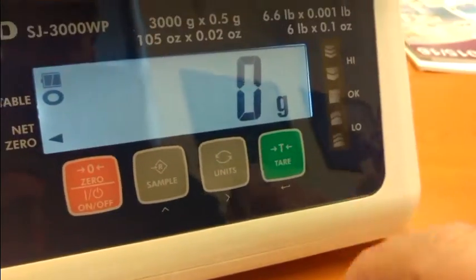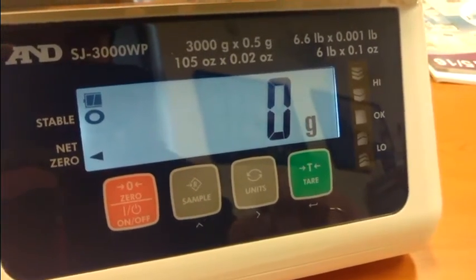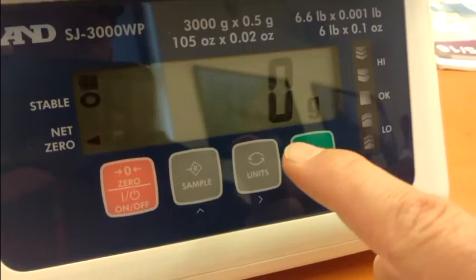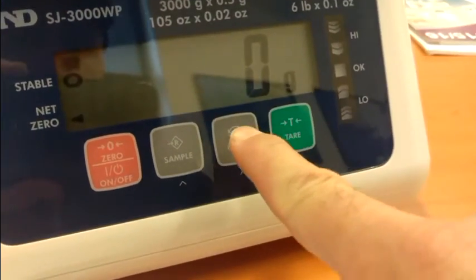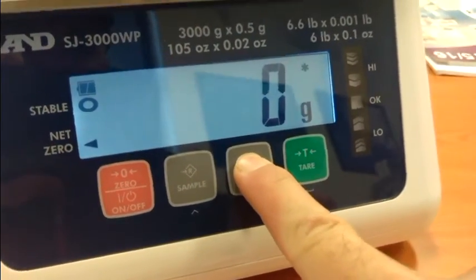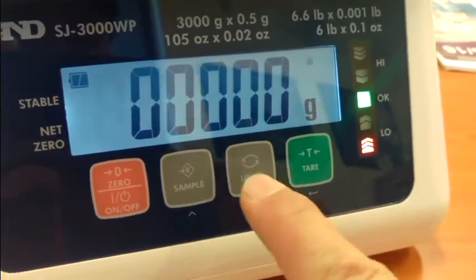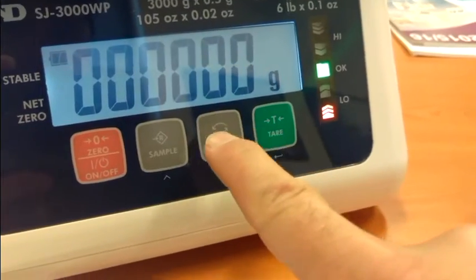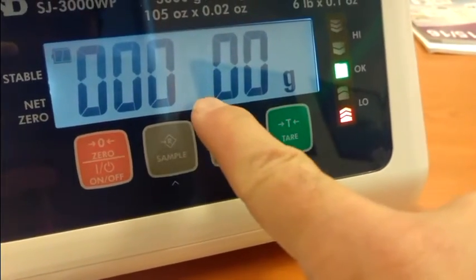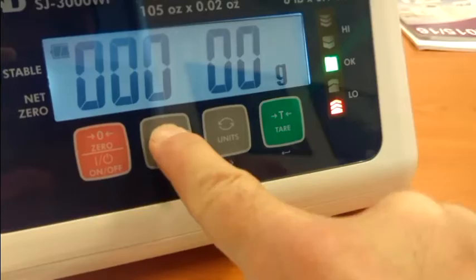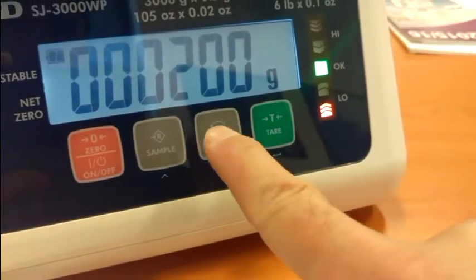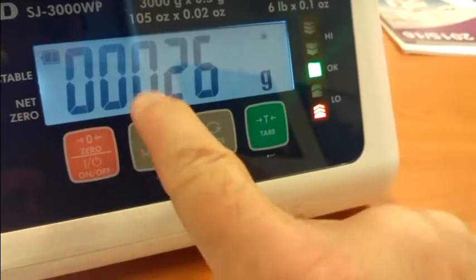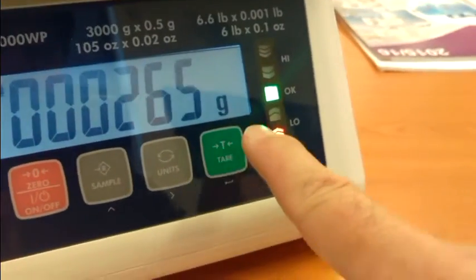Now if we're filling 250 gram strawberry punnets we might want to set 265 as our low limit and 300 as our high limit. So to do that we just touch and hold this key until the low value comes on. You can see it says low here. And we just use these arrow keys to set the value to what we want. When the one's flashing that you want to change you just increment it with this one. We go across and set each digit until it's 265.